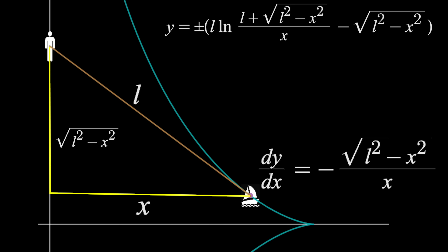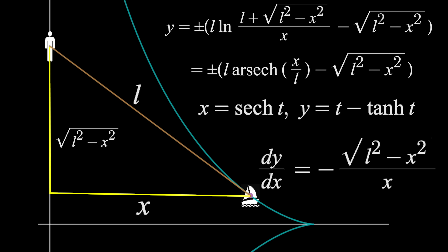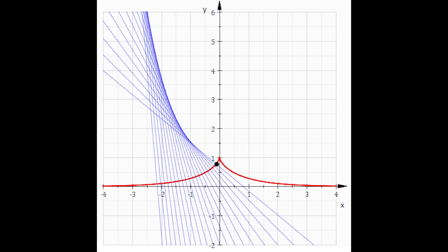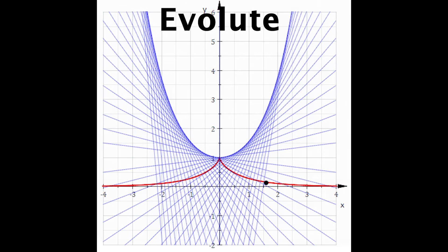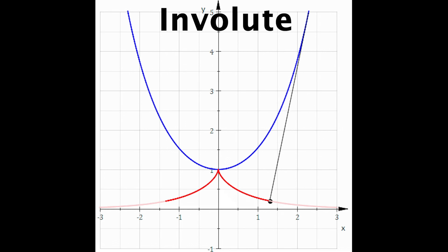Now hyperbolic trig comes in because this first term can easily be written in terms of the inverse of hyperbolic secant. We can also parameterize the equation, and if we do so, both the x and y-coordinate as a function of time involve regular hyperbolic trig. But here's probably my favorite part of this: notice that if you find the normal line to this curve at a few points, they don't all intersect at the same location, but they bunch together up here, and as you add more, we see this kind of envelope is created. This is known as the evolute of the tractrix, and that envelope you see in blue is the catenary curve — hyperbolic cosine. And there's more: if you take the catenary curve and imagine a string being wrapped around it, the end of that string will trace out a tractrix curve. This is known as the involute of a curve, and when you do the involute then the evolute, or vice versa, you get the original curve back.